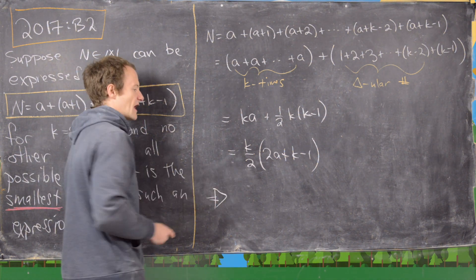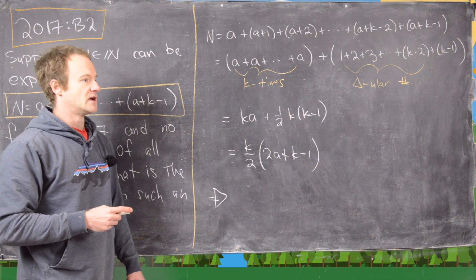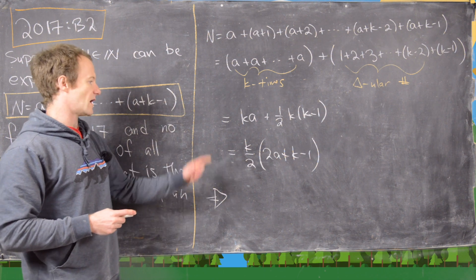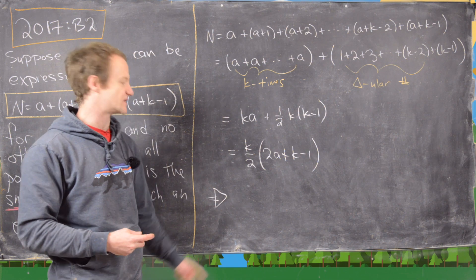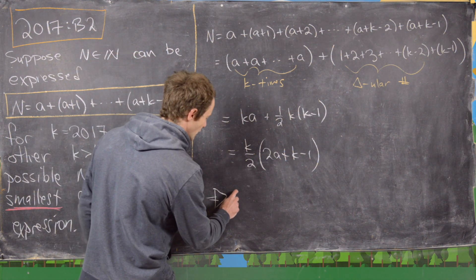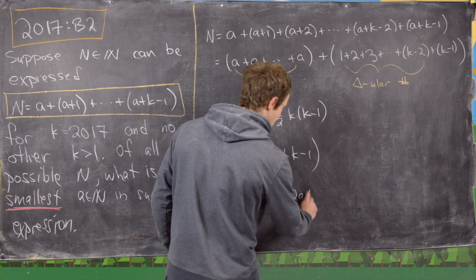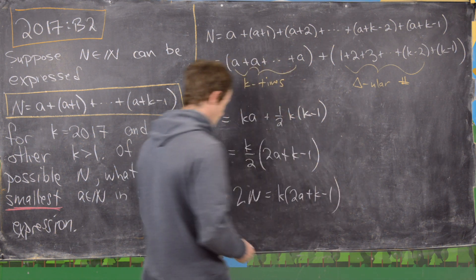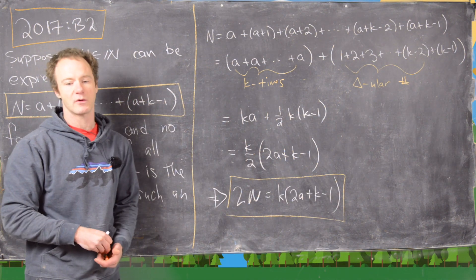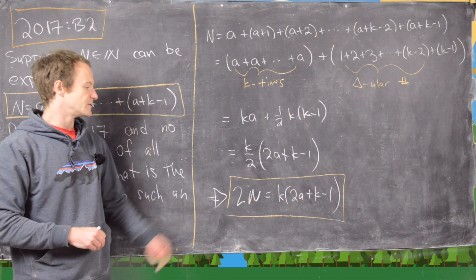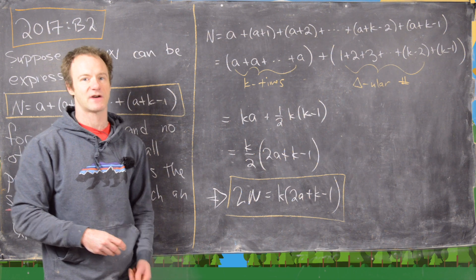So that we don't have to deal with this 2 in the denominator, we'll prove an equivalent statement involving 2 times n instead of just n. That means we can write 2n equals k times the quantity 2a plus k minus 1, and this value of 2n is actually the one we're interested in.